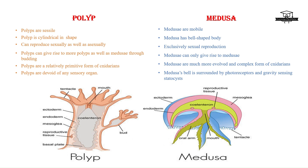Polyps can give rise to both new polyps and medusa through budding, but medusa can only give rise to medusa. Polyps are relatively primitive compared to medusa — they lack sensory organs, which means they don't have eyes and ears. Medusa are more evolved and complex; they have sensory organs like photoreceptors and statocysts.